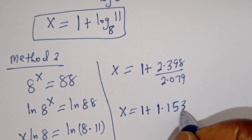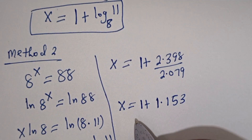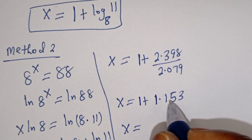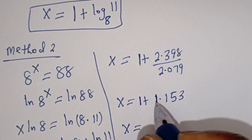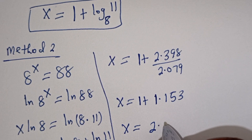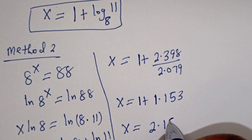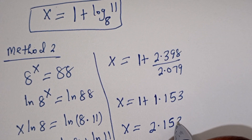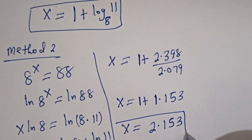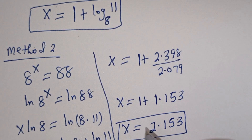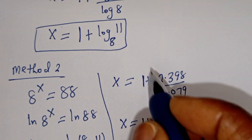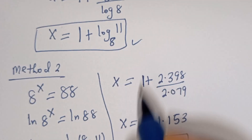2.398 divided by 2.079 is 1.153. Then s is equal to 1 plus 1.153, that is 2.153. This is the final answer when you use your calculator. Both methods give the same result.